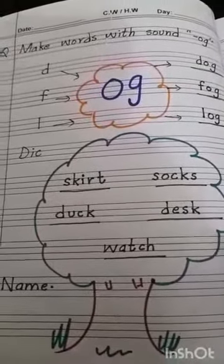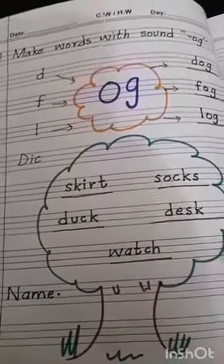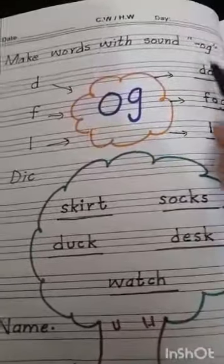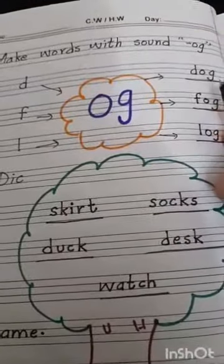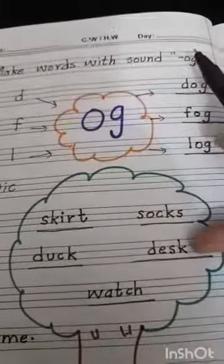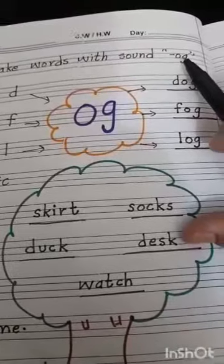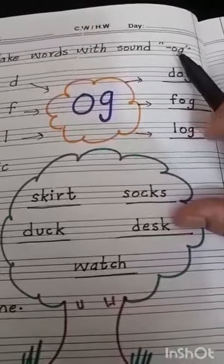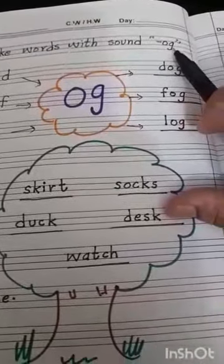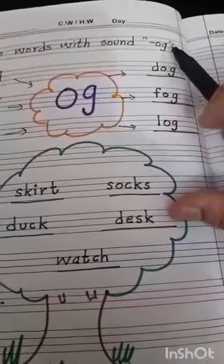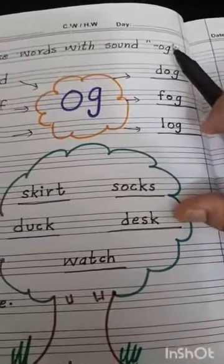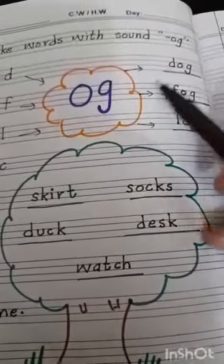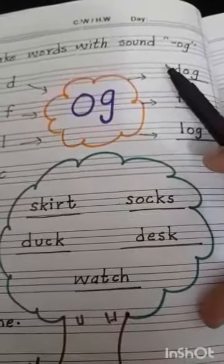Do you know what is the OG family? OG is called the OG family. Just see — what is the sound of O? And what is the sound of G? Good. Then we put them together and they make the sound OG.